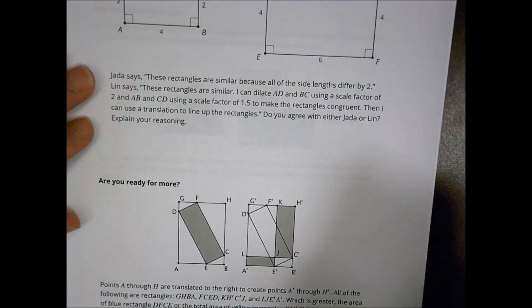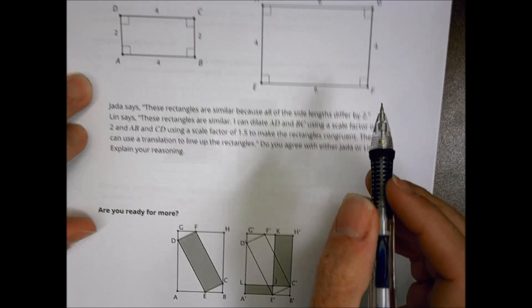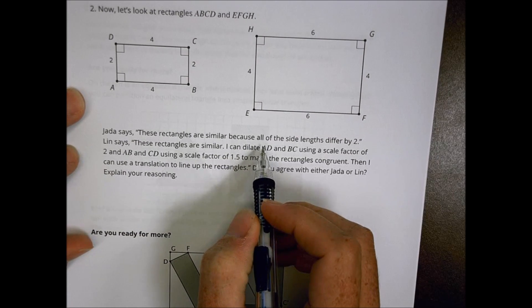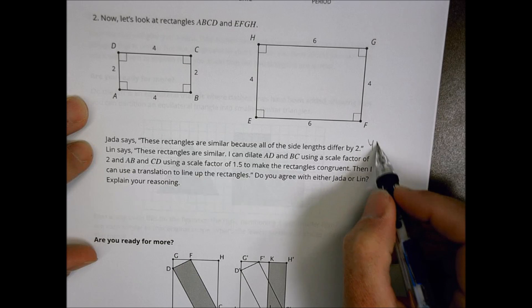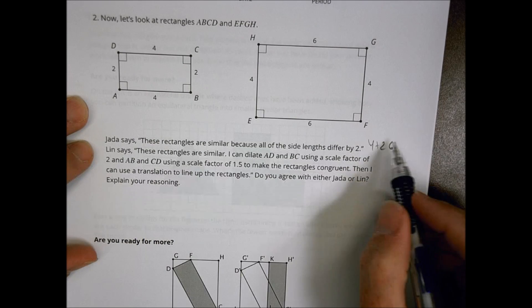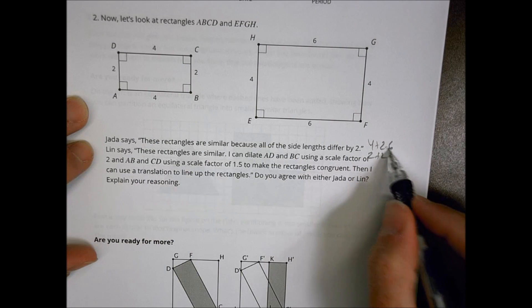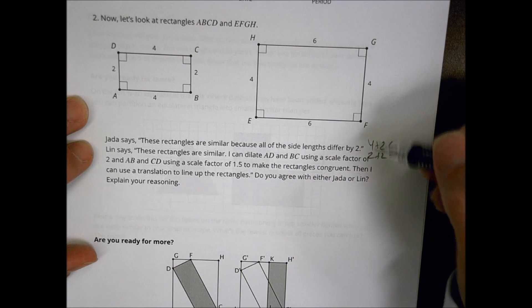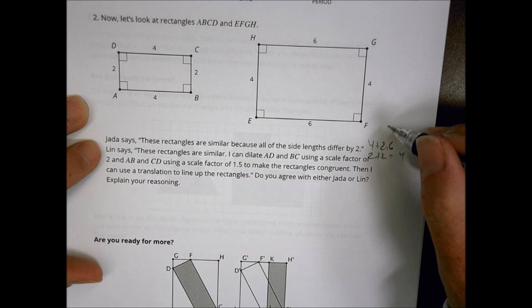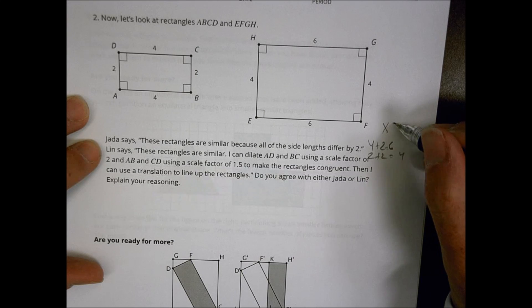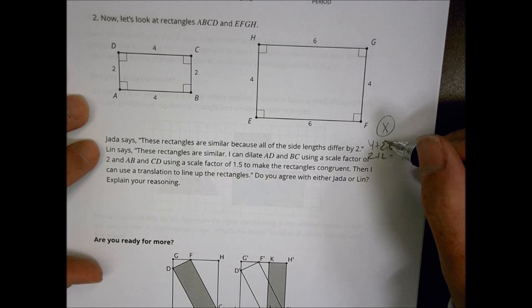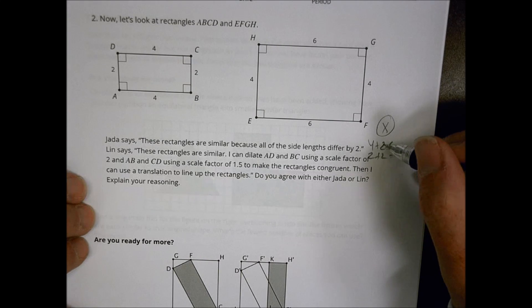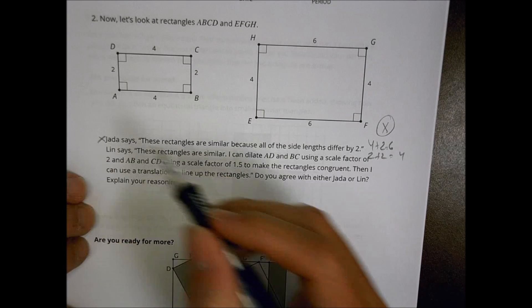When we take a look at the rectangle here, we have people having a conversation that they're similar. We have Jada who says they're similar because all the side lengths differ by two. So what's Jada doing? Jada's saying you have four plus two is six and two plus two is four. Well we know that when we're talking about similarity with shapes, there should be something in the scale factor that we multiply by. We don't add. We multiply. And in this case here, because we are multiplying, we're not multiplying at all, we're adding, Jada's going to be incorrect there.